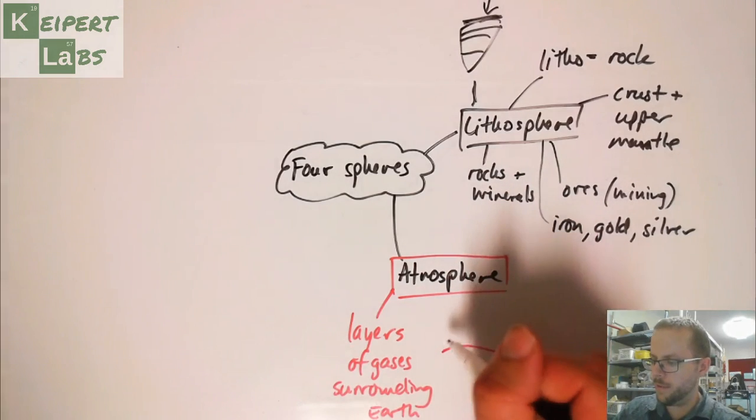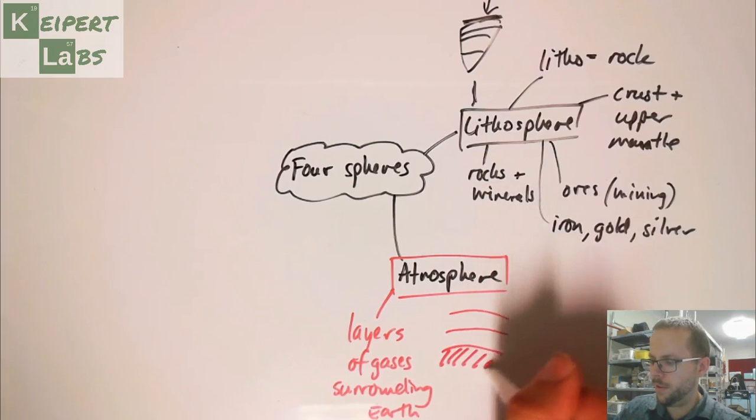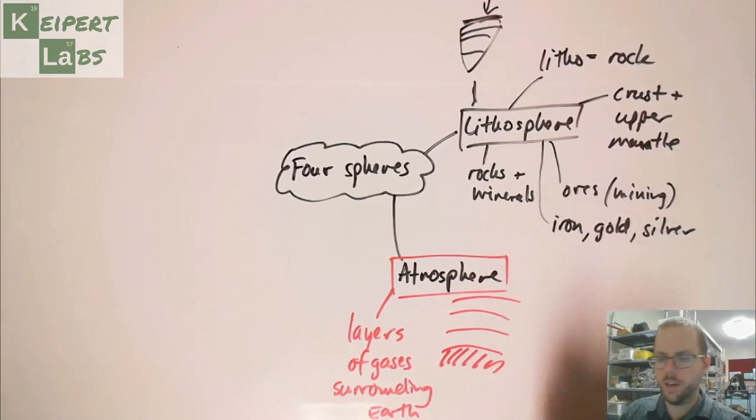Because what we have here is that there are multiple kind of layers to it. If we imagine this to being the surface of the earth, that we have, this is our earth, then there are different layers that extend as we move further and further out from earth.